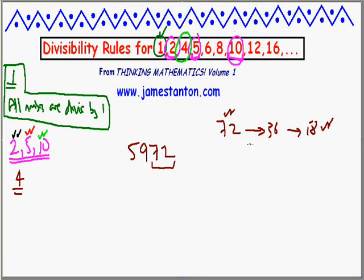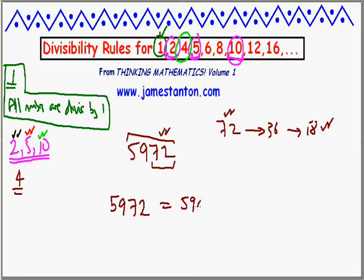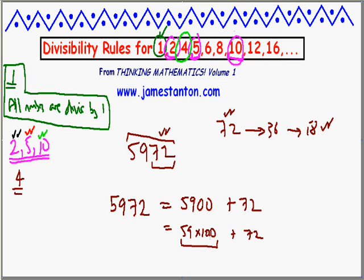Why does that work? We use the same trick as before, this time focusing on multiples of 100. Every number can be written as a multiple of 100 plus its final two digits. So 5,972 is really 5,900 plus 72, which is 59 times 100 plus 72. Since 100 is already a multiple of 4 (it equals 4 times 25), any multiple of 100 is automatically a multiple of 4 — no need to check that part. So you only need to check whether the final two digits can be halved twice.